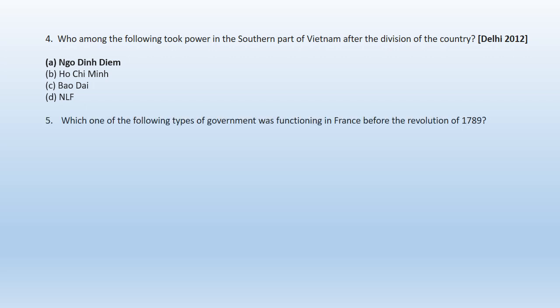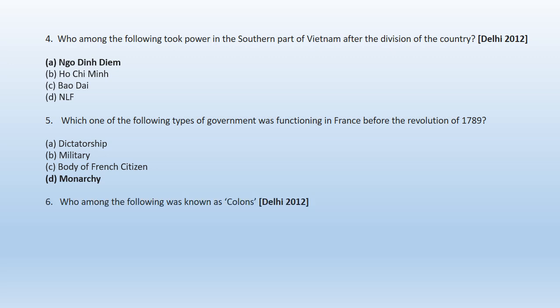Question 5: Which one of the following types of government was functioning in France before the revolution of 1789? A. Dictatorship, B. Military, C. Body of French citizens, D. Monarchy. The right option is option D. Monarchy was the government functioning in France before the revolution of 1789.